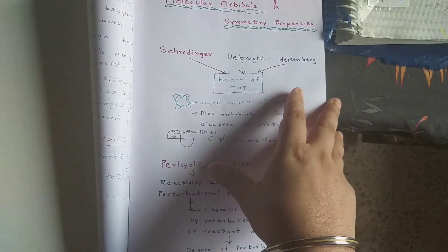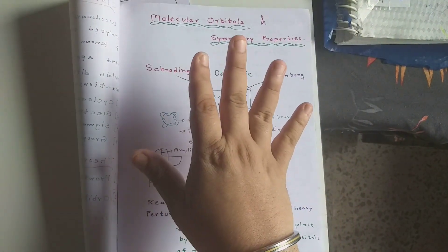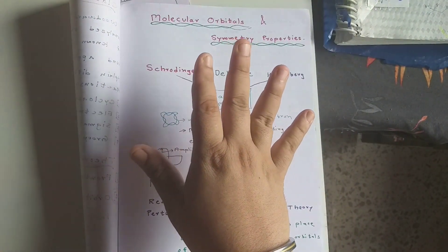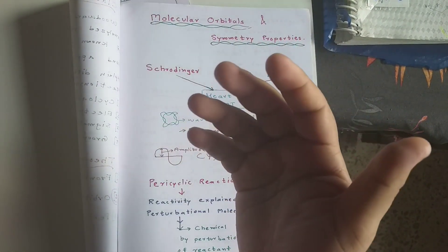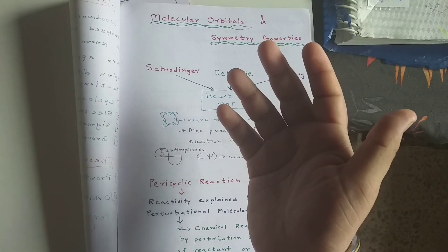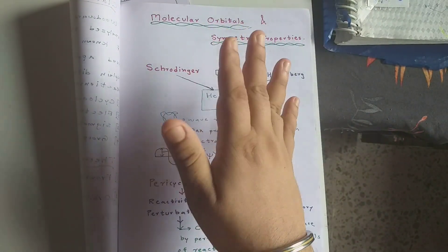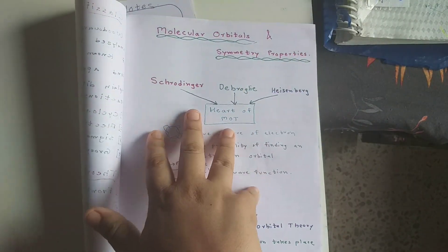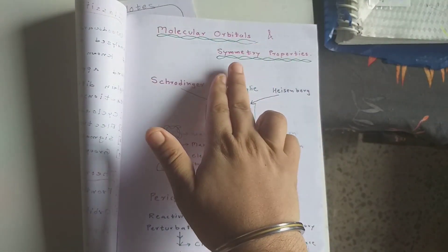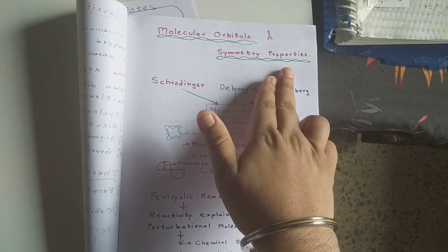To summarize what we have discussed in this first part: the definition of pericyclic reactions, their characteristics, the theories available for analyzing them, and the classification of pericyclic reactions. These are very basic foundational topics. In the second video, we will be discussing molecular orbitals and their symmetry properties. Thank you.